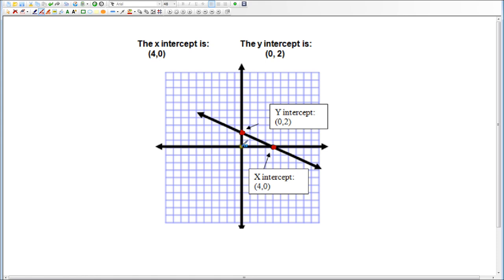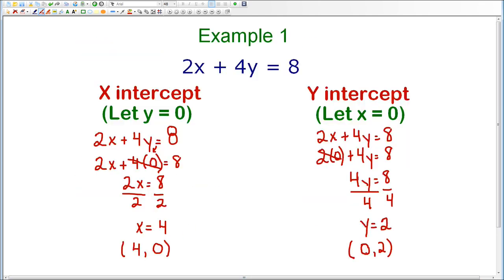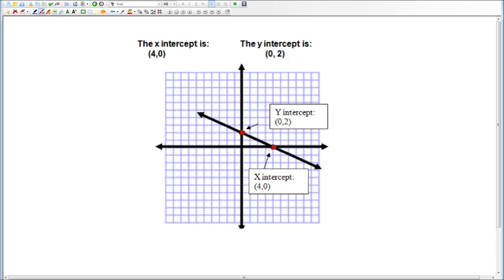Then I'm going to graph the y-intercept, which was 0, 2 on the y-axis. Now that you have two points, you can draw a line through those two points. This line then becomes the graph that represents the original equation, which was 2x plus 4y equals 8. So you end up with the graph that represents that equation just by finding the x and y-intercepts.